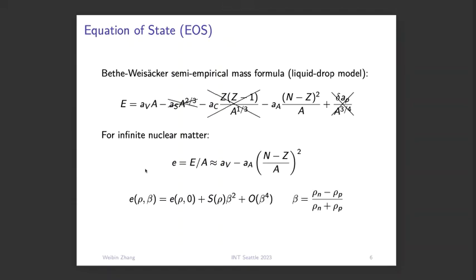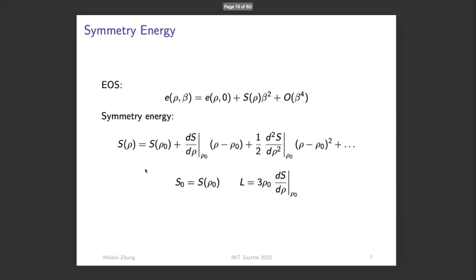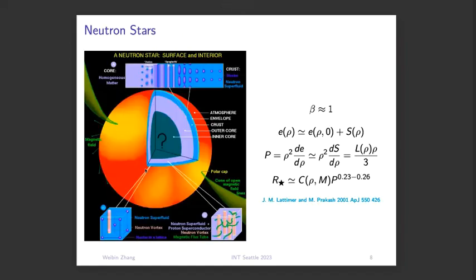For an infinite system, it's better to describe in terms of density rather than number of protons or neutrons. The energy of the system depends on the density of neutrons and density of protons. From the equation of state we get important parameters: the coefficient is what we call symmetry energy. Expanding this symmetry energy along the saturation density, the constant term is the symmetry energy S at saturation density, and the first-order derivative with respect to density is what we call the L value. These S and L values describe the equation of state and have wide applications.